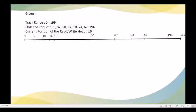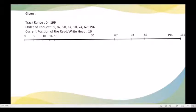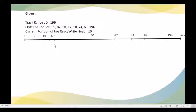Since this is the Shortest Seek Time First scheduling algorithm, wherein the request resulting in minimal arm movement is executed first, we start from the current position of the read/write head at track number 16, and it will move towards the track number that results in minimal arm movement. From track number 16, it will move towards track number 14.